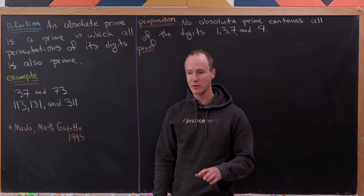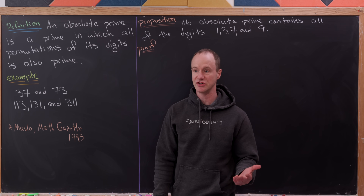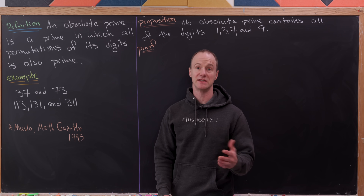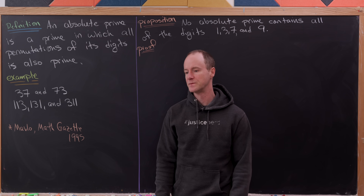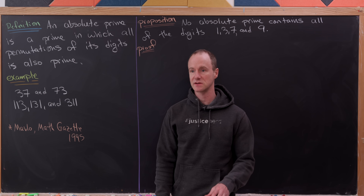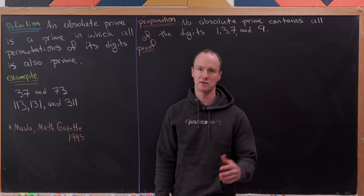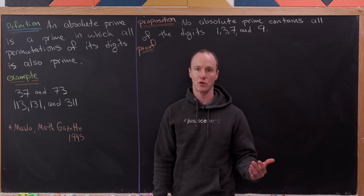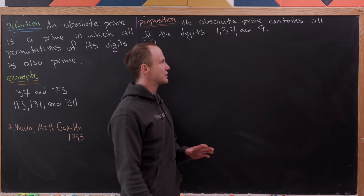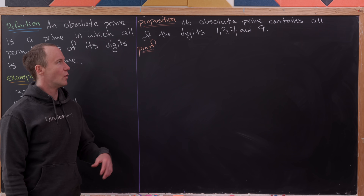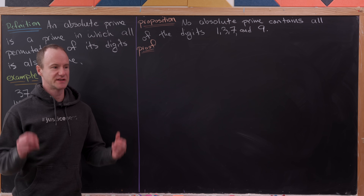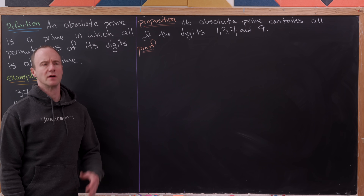Absolute primes cannot contain even digits, because you could shuffle the digits and get an even digit in the ones place, making the whole number even. The only exception is the number 2 itself. Likewise, absolute primes cannot contain the digit 5, unless the number is 5 itself, because shuffling could put 5 in the last position making it divisible by 5. So absolute primes can only contain the digits 1, 3, 7, and 9 — at least the interesting ones with more than one digit.